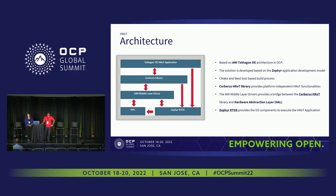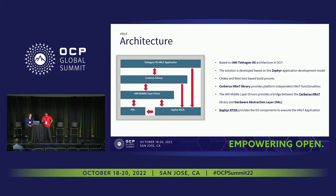The top layer is the Tektagon OE HRoT application, which implements all the HRoT functionalities per specification. Currently the implementation is Intel PFR 2.0, handling the manifest and the protect/detect/recover functionality, including update functionality. The HRoT core used is Microsoft Project Cerberus Azure library, which implements standard interfaces for the HRoT. Below that is the AMI middle layer that interfaces between the silicon vendor SDK and the Cerberus library.